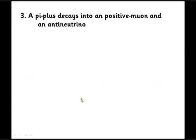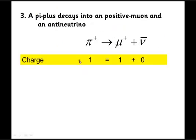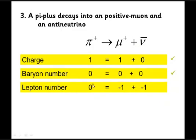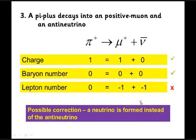Next: pi plus decays into a positive muon and an anti-neutrino. Charge: plus one equals plus one plus zero — fine. Baryon number: zero equals zero plus zero — fine. Lepton number: zero equals minus one plus minus one — that gives zero equals minus two, which doesn't work. If we change the anti-neutrino to a neutrino, that becomes plus one, making lepton number zero equals minus one plus one, which works.